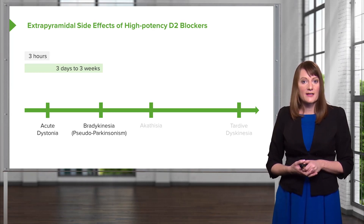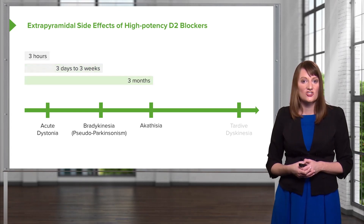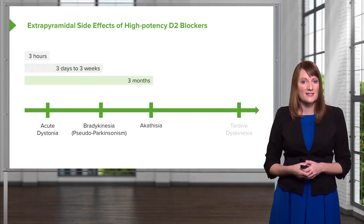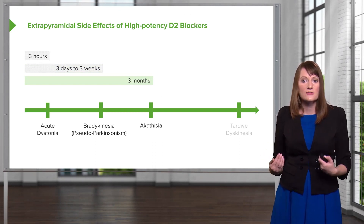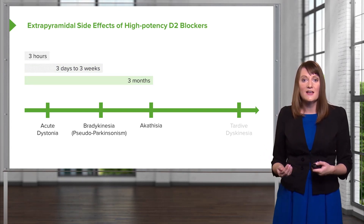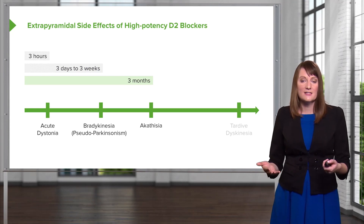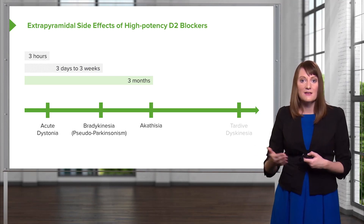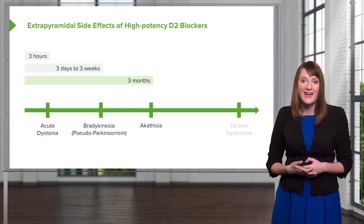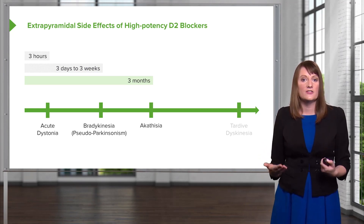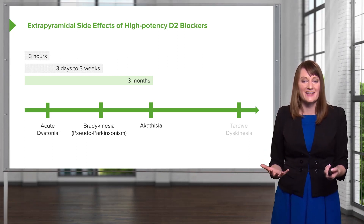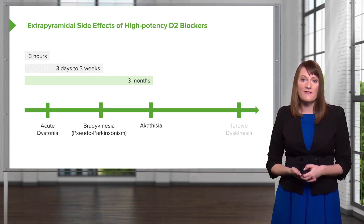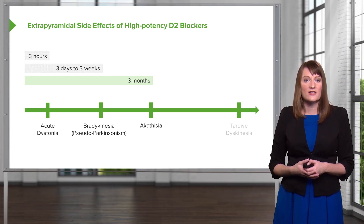Another problem that can occur within months of starting an antipsychotic medication is akathisia. This is highly distressing to patients. Akathisia is an internal sense of restlessness — it will often manifest as a patient pacing, maybe tapping their foot or hand on their leg. They'll often describe to their doctor that they just feel like they want to crawl out of their skin. That's a sign of akathisia, which is very distressing.